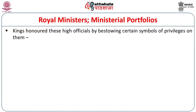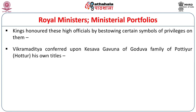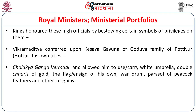Kings honoured high officials by bestowing certain symbols or privileges upon them. For instance, Vikramaditya conferred upon Kesava Gavunda of the Goduva family of Pottyur his own title Chalukya Ganga Vermadi and allowed him to use a white umbrella, double chauris of gold, a flag or ensign of his own, a war drum, a parasol of peacock feathers, and other insignias. Thus the king allowed high officials to use royal insignias, and many such honours were bestowed upon senior officials.